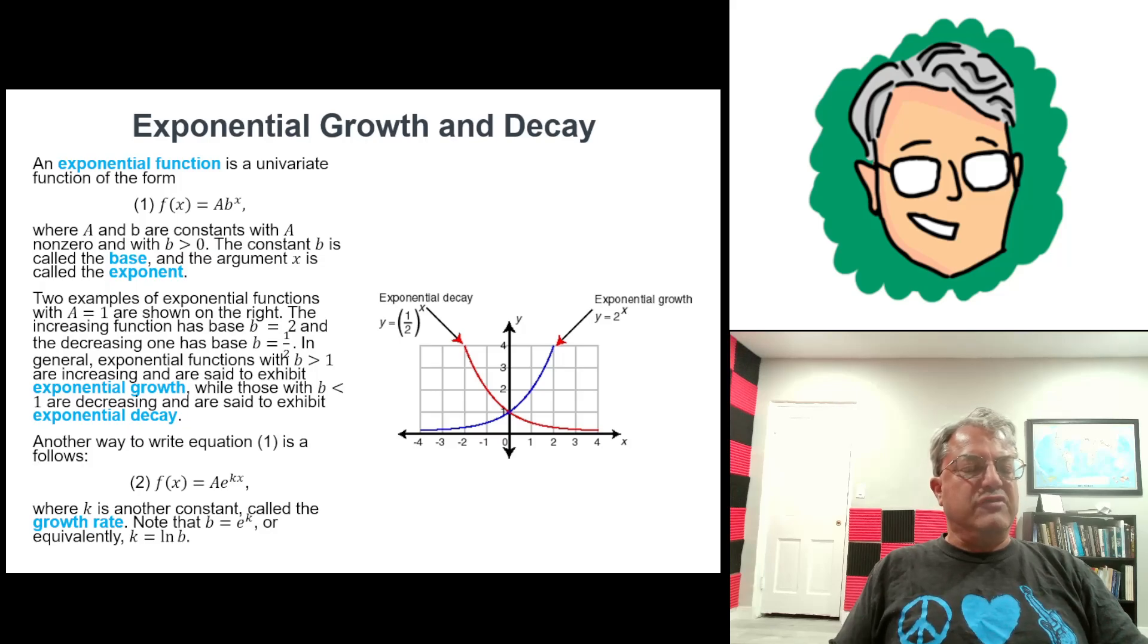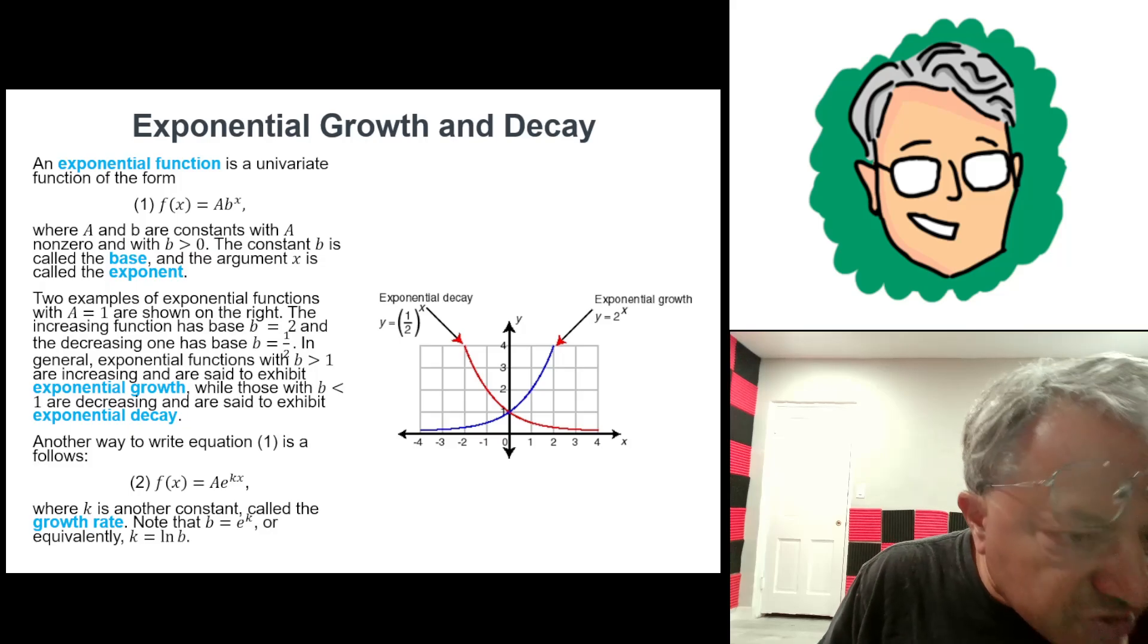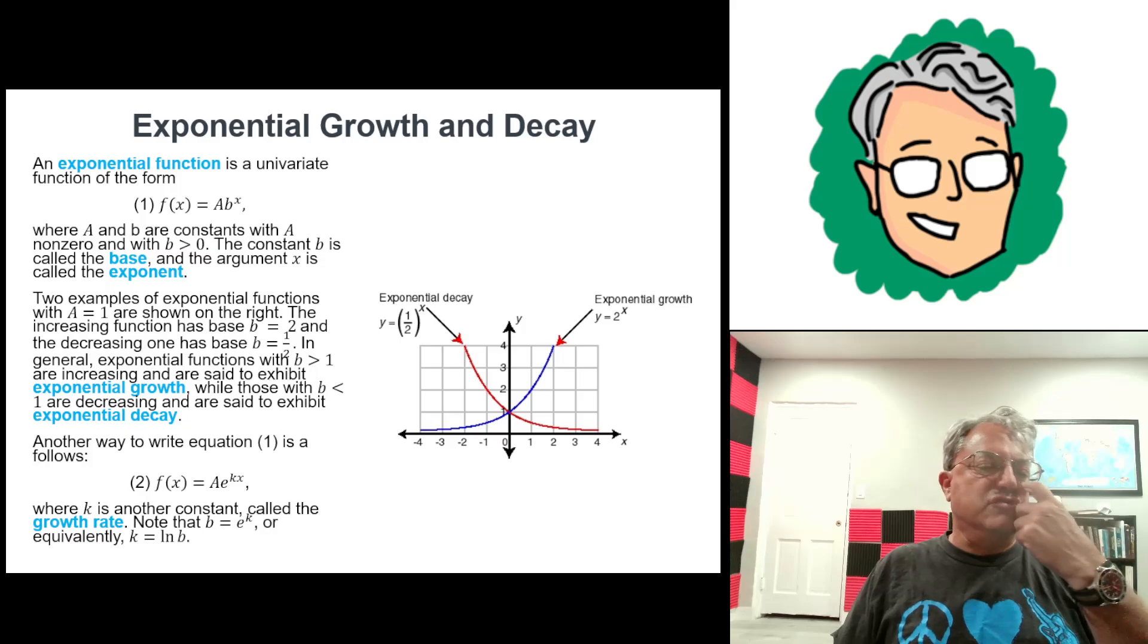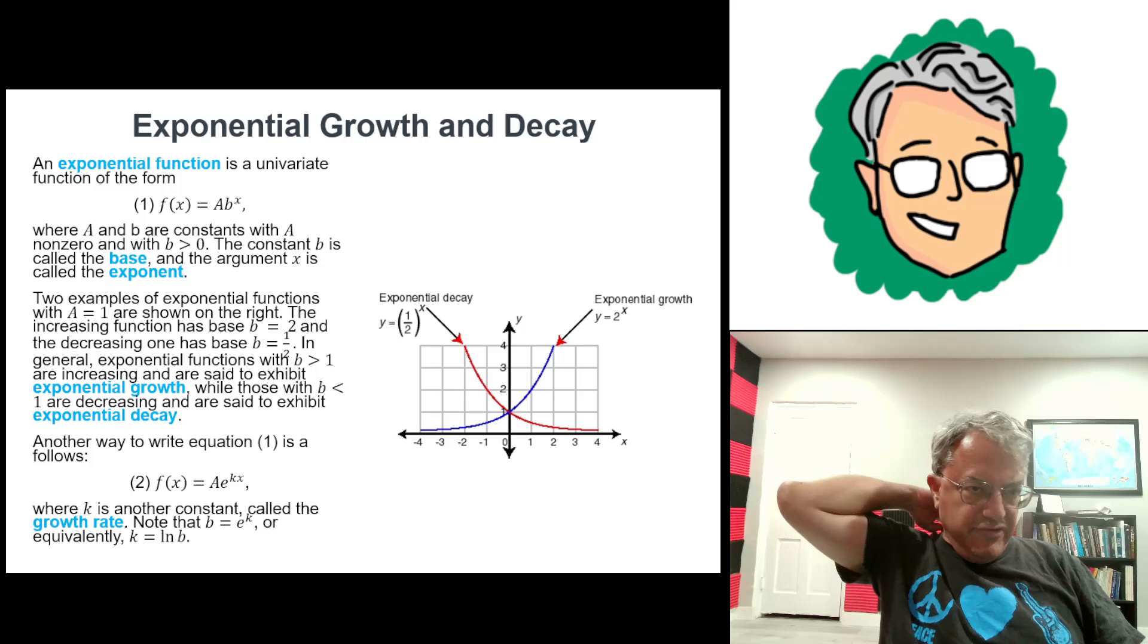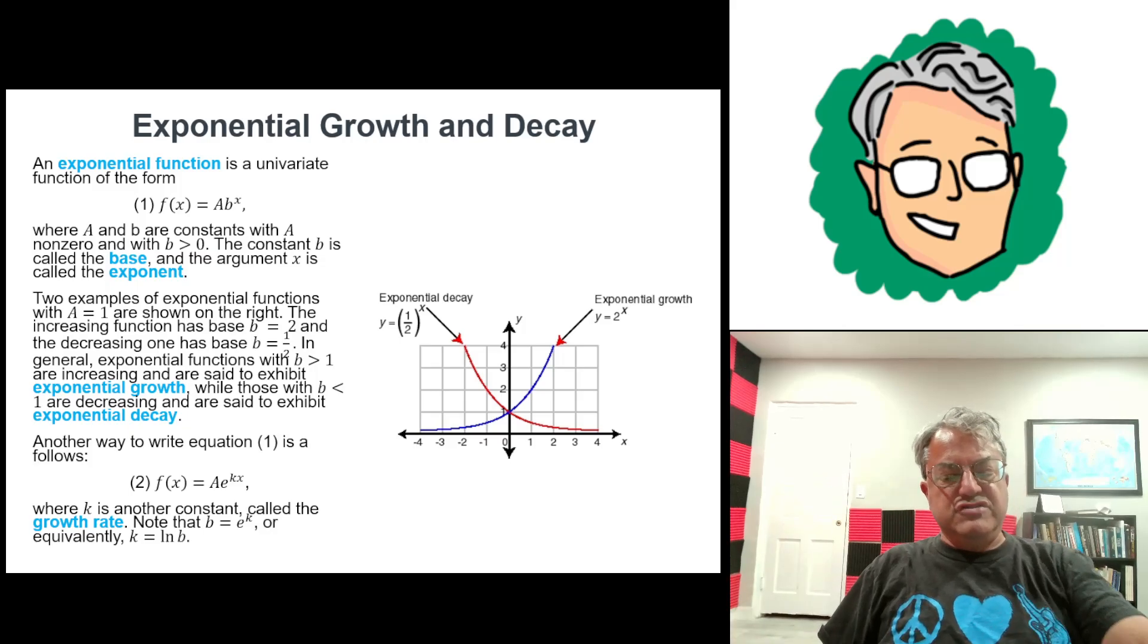This is a more commonly used form, and I think a nicer form. So we can write f(x) = ae^(kx), where now k is another constant related to b. k is just the natural logarithm of b. B is e^k, and k is the natural logarithm of b, and k is what's called the growth rate, sometimes the relative growth rate. Anyway, that's what exponential functions are.